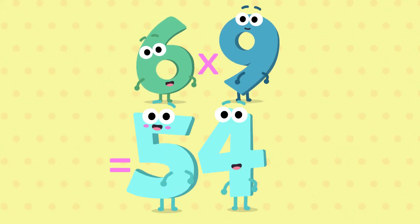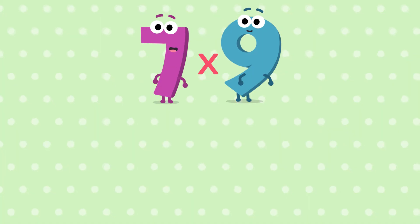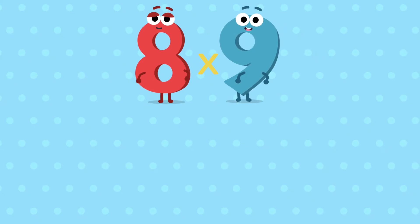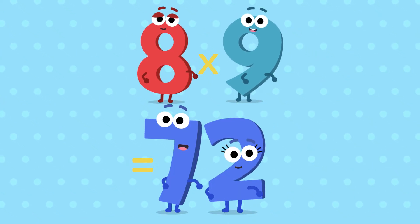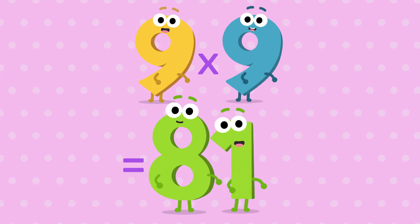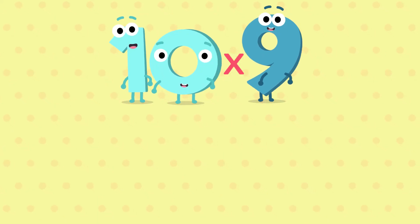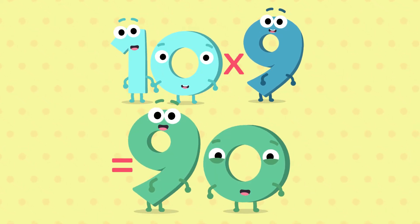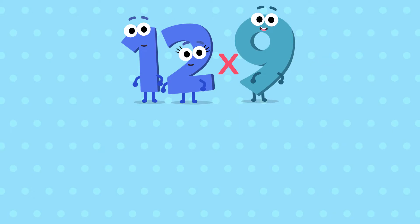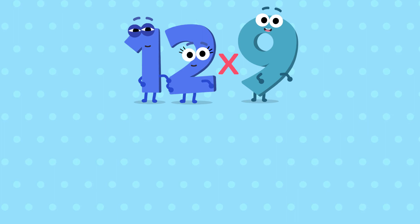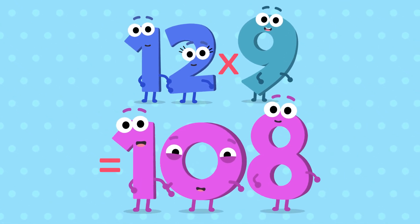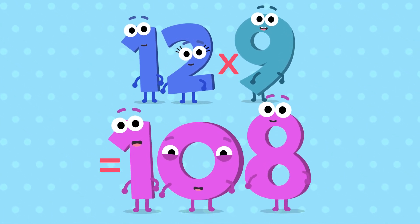6 nines are 54, 7 nines are 63, 8 nines are 72, 9 nines are 81, 10 nines are 90, 11 nines are 99, and 12 nines are 108.